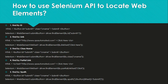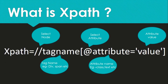The last and most useful locator is XPath. XPath is the most important option when we don't have a unique ID, unique class name, or unique partial link text — XPath is the one that is going to help us. Let's see what XPath is.